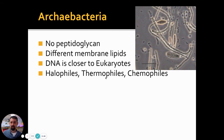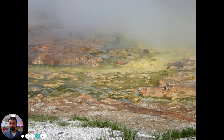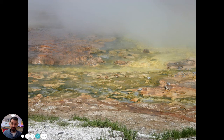So these archibacteria have the ability to live in really radical places. We used to think there would be no life in certain areas, but anytime you go to really odd places — like hot springs in Yellowstone — and think nothing could live there, it turns out archibacteria are living there. Here's an example of a hot spring: you can see some green algae growing, but even here there's a bunch of archibacteria living.